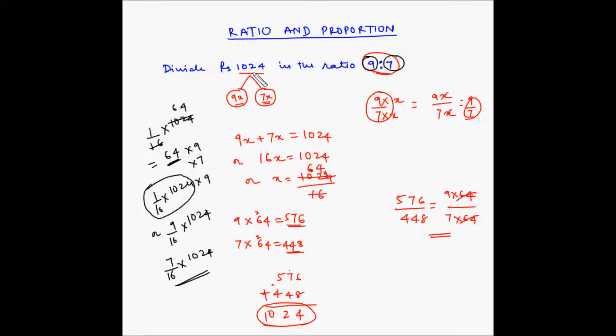Basically, if you have to divide anything in a certain ratio, you basically add the two numbers of the ratio. For example, we did 9 plus 7, put that in the denominator like we did 16 is in the denominator. Then, put each number one by one in the numerator and multiply it by the number that you want to split up and you will get the answer.